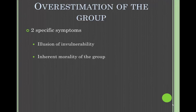First, the overestimation of the group — behaviors that suggest the group believes it is more than it is. There are two specific symptoms. The first is the illusion of invulnerability: the group's belief that they are special enough to overcome any obstacles or setbacks, feeling invincible. The second is the inherent morality of the group: they adopt the position that the group is good and wise, assume members are thoughtful and good, and therefore believe their decisions will be good — purging themselves of any shame or guilt while ignoring the ethical and moral implications of their decisions.